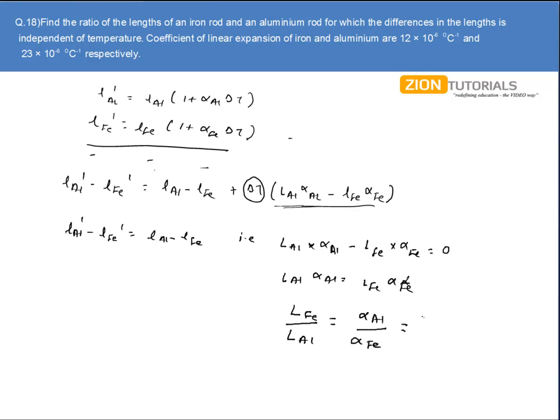Substituting the values, α of aluminum is 23×10^-6 and α of iron is 12×10^-6. So the answer is 23 by 12.